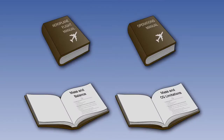Let us look at the responsibilities of the operator as defined in EU Ops. The operator must ensure that before flight, the loading, mass and centre of gravity of the aeroplane comply with the limitations laid down in the Aeroplane Flight Manual and the Operations Manual, which could be more restrictive.